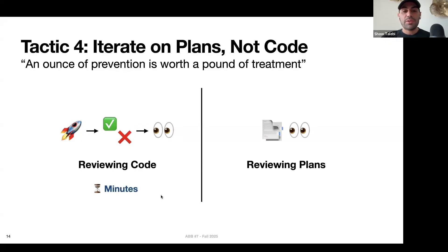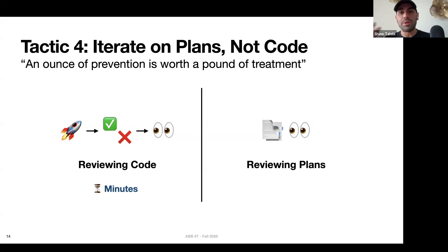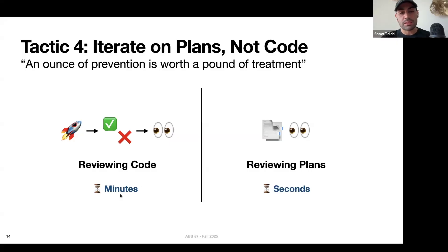But if you're reviewing plans, a lot of times you'll find mistakes or inconsistencies quickly — maybe 90% of what Claude comes up with is perfect, and there's just one step that's a little off. It's much easier to give feedback on that short plan than to go through the whole cycle of running code, reviewing output, and debugging. Reviewing plans usually takes seconds; running and reviewing code takes significantly longer. This is like the old adage: an ounce of prevention is worth a pound of cure.